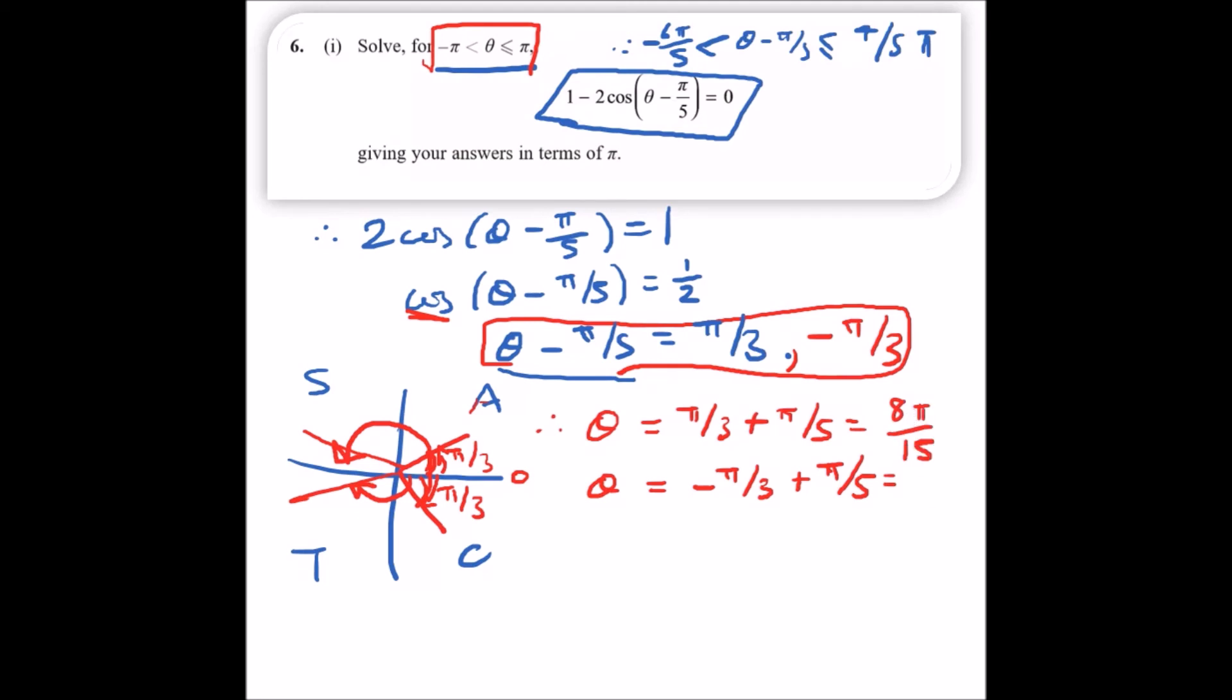And the second one, -π/3 + π/5, should give us -2π/15. And that's it guys, this is the solution we're looking for.